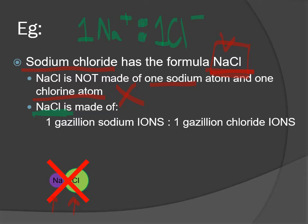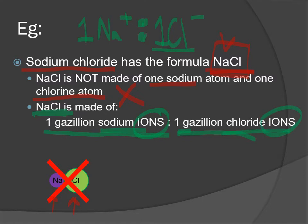That is the lowest whole number ratio. That's not saying there's one of them—that's saying for every one sodium there is, there is one chloride. So think of it as one gazillion sodium ions—however much that is, a whole bunch. Whatever amount there is of sodium ions, there is an equal amount—because it's a one-to-one ratio—of chloride ions.